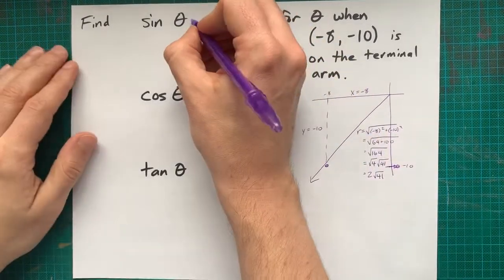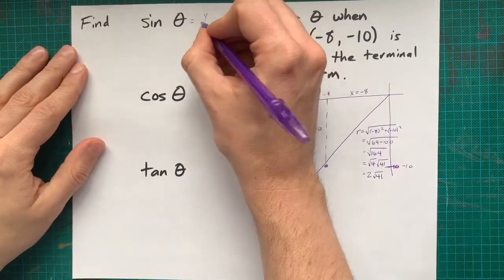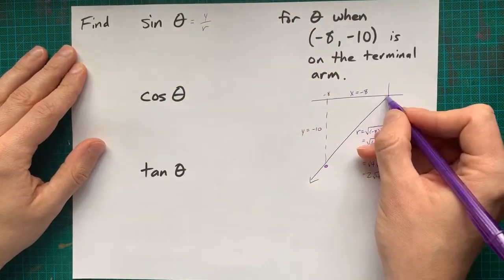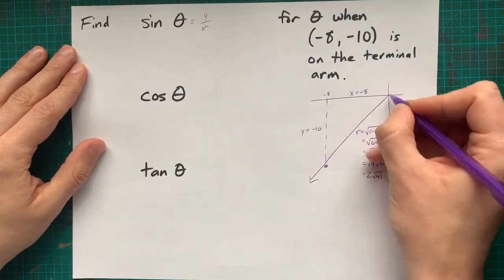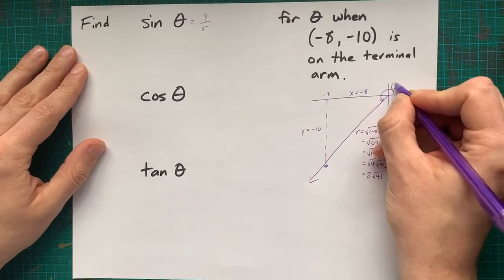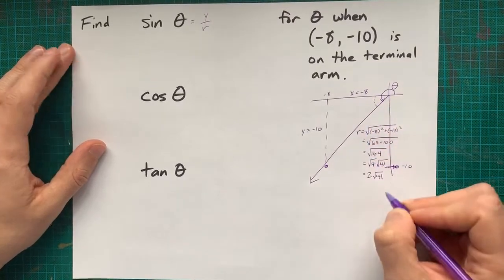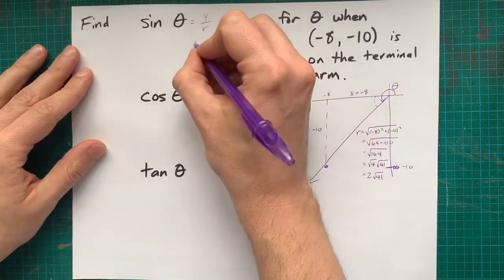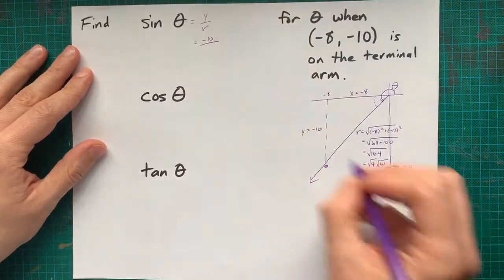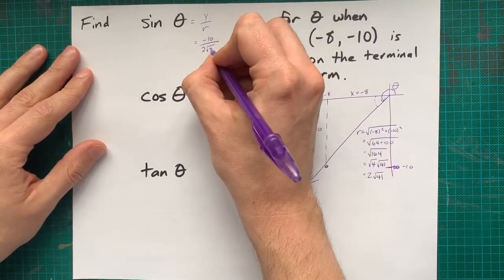Now, again, with the trig ratios, sine is y over r, or opposite over hypotenuse, relative to the related acute angle here. y over r is negative 10 over 2 root 41.